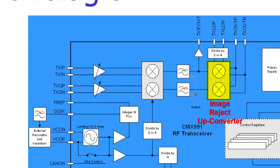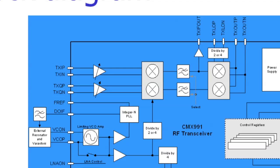An image-reject upconverter translates the IF to the final frequency, which reduces the external filtering requirements. The transmit LO is developed externally but the dividers are on chip. Both high-side and low-side mixing are supported.